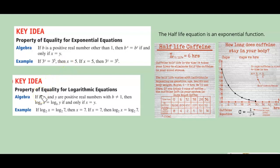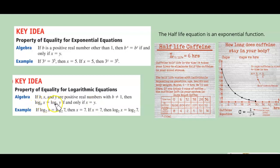The property of equality for logarithmic equations states: if b, x, and y are positive real numbers and b is not equal to 1, then log base b of x equals log base b of y if and only if x equals y. If you've got the same log base, then x equals y. For example, if log base 2 of x equals log base 2 of 7, that means x equals 7.